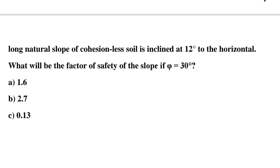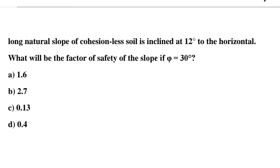Next question: a long natural slope of cohesionless soil is inclined at 12 degrees to the horizontal. What will be the factor of safety of the slope if phi equals 30 degrees? Option A: 1.6, Option B: 2.7, Option C: 0.13, Option D: 0.4. The correct answer is Option B, 2.7.